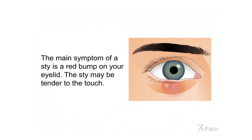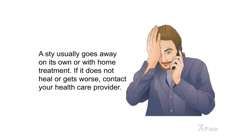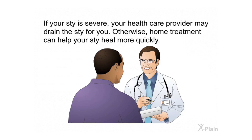The main symptom of a stye is a red bump on your eyelid that may be tender to the touch. Styes can also cause crusting around the eyelids, eyelid pain or tenderness, excessive tearing, and swelling of the eyelid. A stye usually goes away on its own or with home treatment. If it does not heal or gets worse, contact your health care provider. If your stye is severe, your health care provider may drain the stye for you.